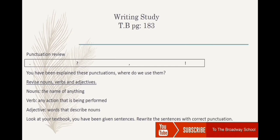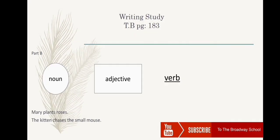Let's review: noun, verb, and adjective. A noun is the name of anything. A verb is an action being performed. An adjective is a word that explains a noun. In the next part you have two sentences: 'Mary plants roses' and 'The kitten chases the small mouse.' Circle the nouns, underline the verbs, and draw a square around the adjective in both sentences.